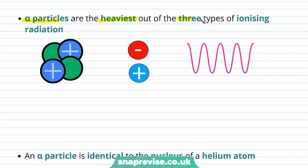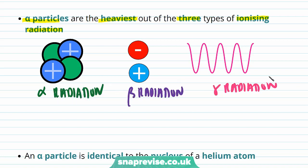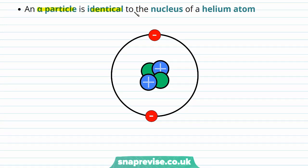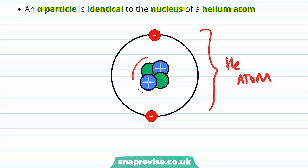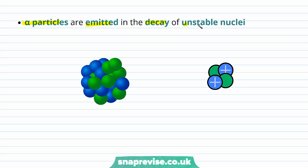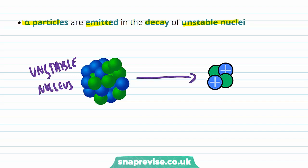Therefore the overall charge is plus 2e. Alpha particles are the heaviest out of the three types of ionising radiation — alpha radiation, beta radiation, and gamma radiation. An alpha particle is identical to the nucleus of a helium atom, and you can see that this helium nucleus is exactly the same as an alpha particle. Alpha particles are emitted in the decay of unstable nuclei — this nucleus is unstable, so it will undergo radioactive decay and emit an alpha particle.